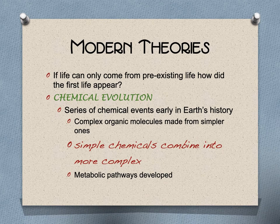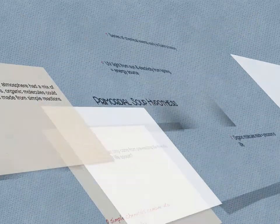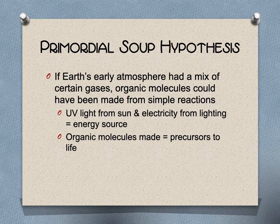Modern theories explain how we went from no life to life through chemical evolution — simple chemicals combine into more complex chemicals, you develop metabolic pathways, and then devise a way to make more of yourself. This ties into the primordial soup hypothesis: all the stuff spewing from volcanoes and brought in by asteroids and water vapor gave you the building blocks of life, although you still had to assemble them.